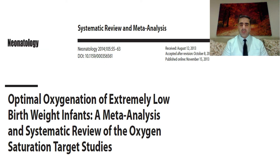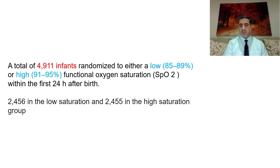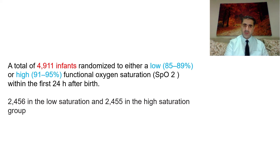We start with optimal oxygen saturation, referencing a systematic review and meta-analysis published in neonatology. This meta-analysis included three major studies with a total of 4,911 infants randomized to either low saturation (85–89%) or high saturation (91–95%), with 2,456 in the low group and 2,455 in the high saturation group.